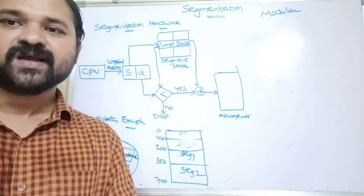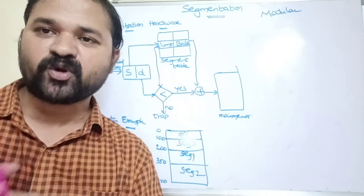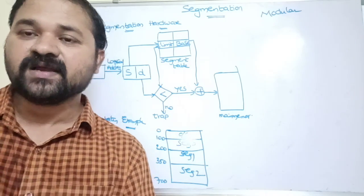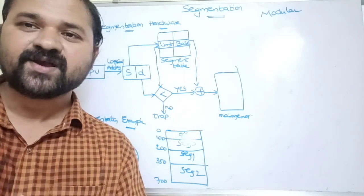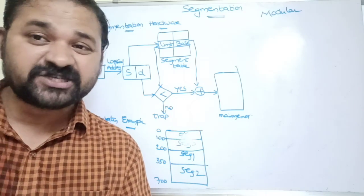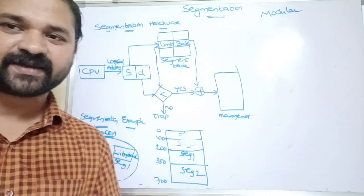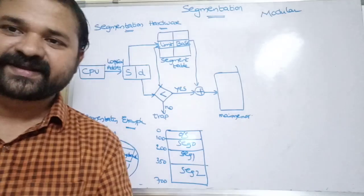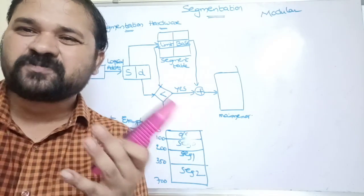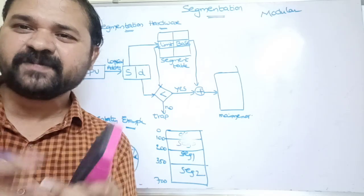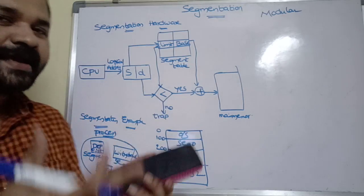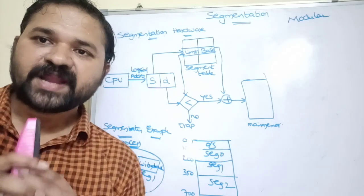In order to solve that problem, we use segmentation. Segmentation is a non-contiguous memory allocation, just like paging. The segments need not be stored in contiguous memory locations — wherever there is a free partition, the operating system allocates that partition for the corresponding segment. A segment is nothing but a method, a function, some object, or some class — anything that is a collection of statements. Generally, a function is called a segment.